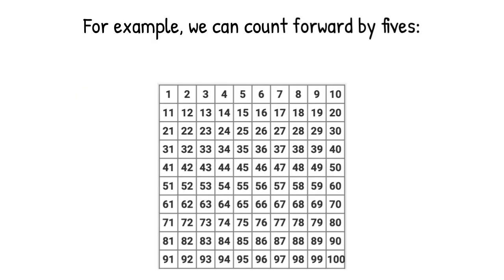For example, we can count forward by fives. 65, 70, 75, 80, 85, 90.